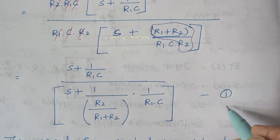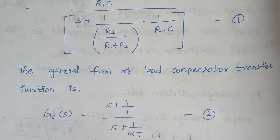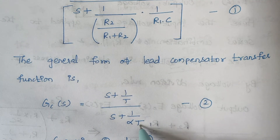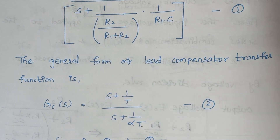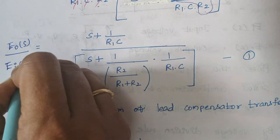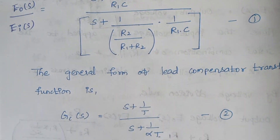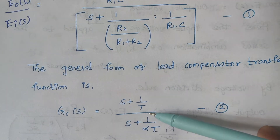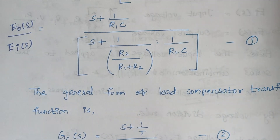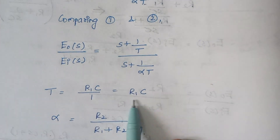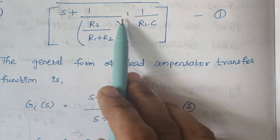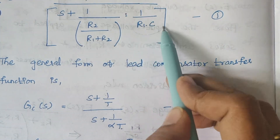This is expression 1. The general form of a lead compensator is given by the standard expression — this is expression 2. Now comparing expressions 1 and 2: in place of 1/T we have 1/(R1C), so T = R1·C. And in the denominator, in place of 1/(αT) we have (R1 + R2)/(R1R2C), identifying α = R2/(R1 + R2). This completes the derivation.